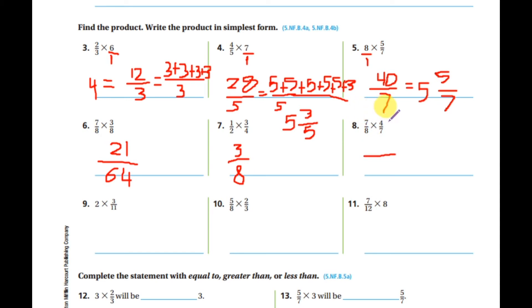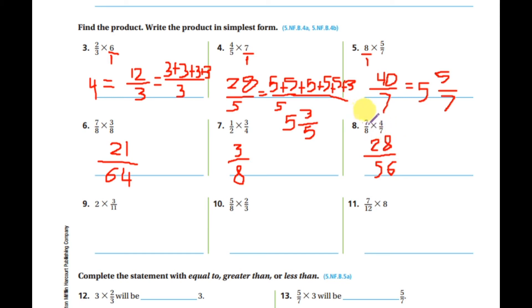Next: multiply numerator by numerator, denominator by denominator. Eight times seven equals fifty-six, and four times seven equals twenty-eight. The common factor is seven, so divide both top and bottom by seven: twenty-eight divided by seven equals four, and fifty-six divided by seven equals eight.